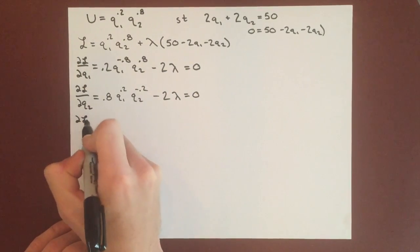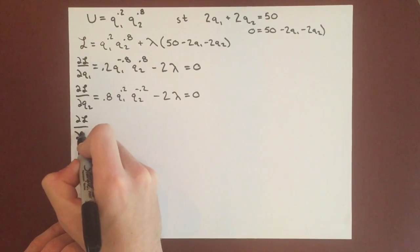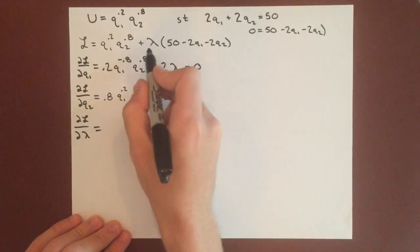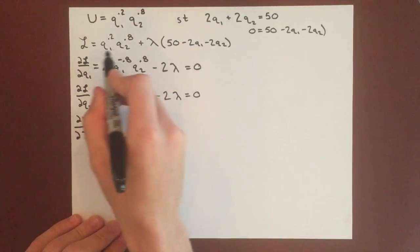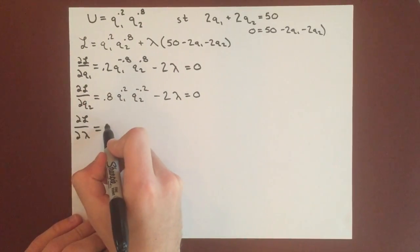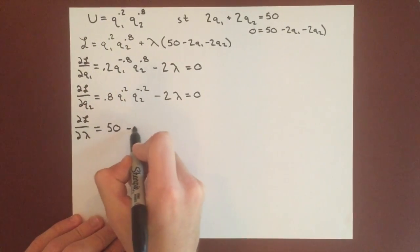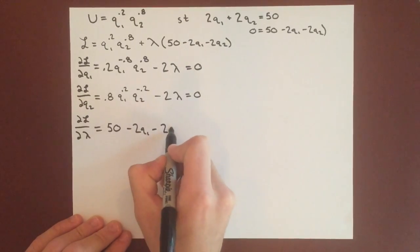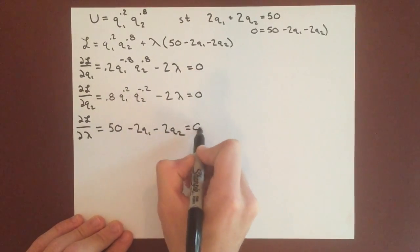And then finally for lambda, it's going to be a little bit easier. We just take the derivative of this section, because there's no lambda in that part, and we get 50 minus 2q1 minus 2q2 equals 0.